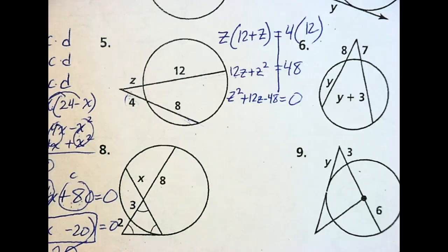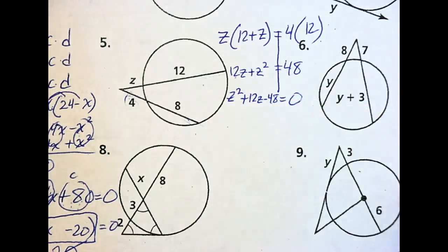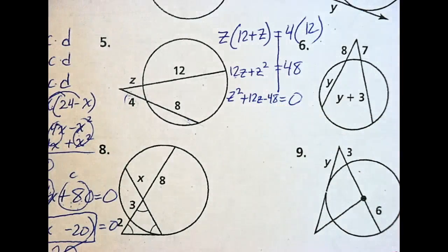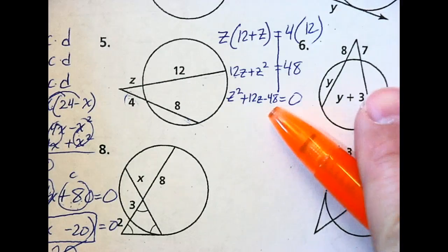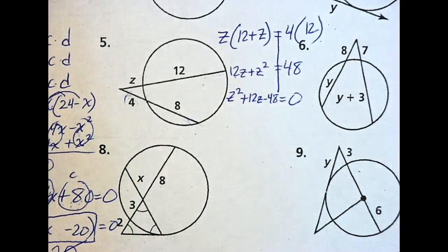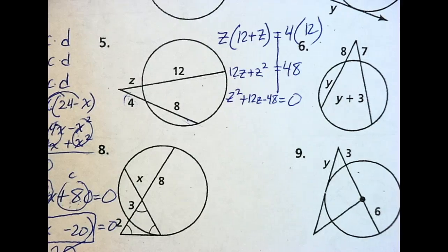Two numbers that multiply to negative 48 and add to 12 — one of them has to be negative. Trying: 1 and 48, no; 2 and 24, no; 3 and 16, getting closer; 4 and 12, no; 6 and 8 — negative 6 and positive... that doesn't add to 12 either. We've tested all the factors — this doesn't factor. We need the quadratic formula.